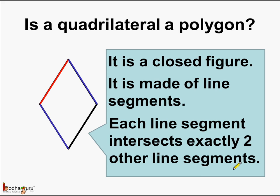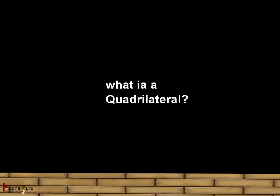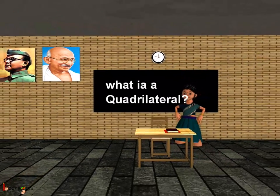And we know all these are properties of a polygon. So we can say every quadrilateral is a polygon. Understood? So that was all about quadrilaterals. The properties of quadrilateral we will see in the next class. Till then, bye-bye children.